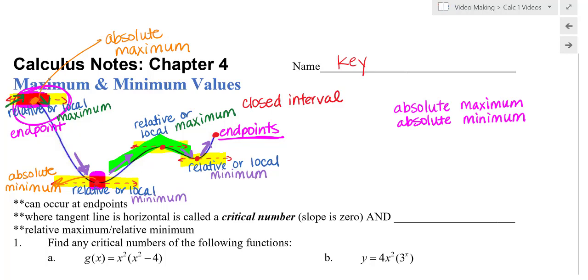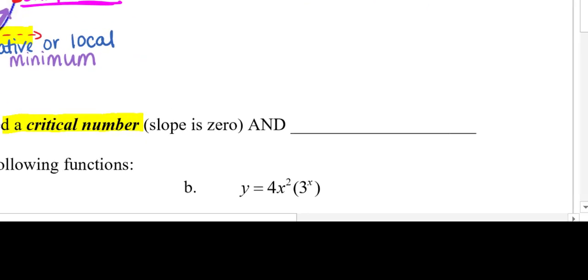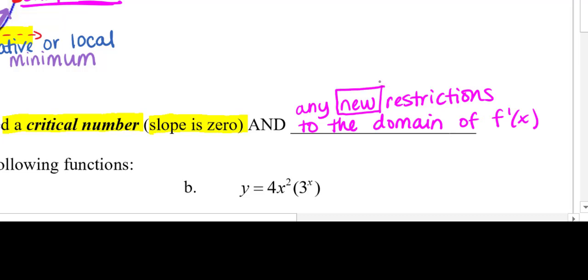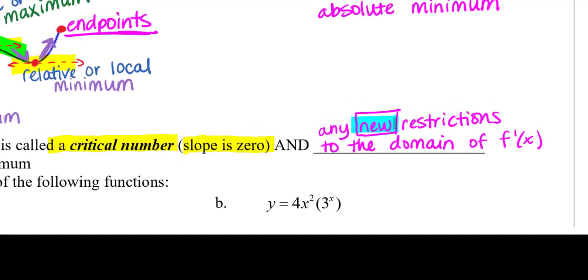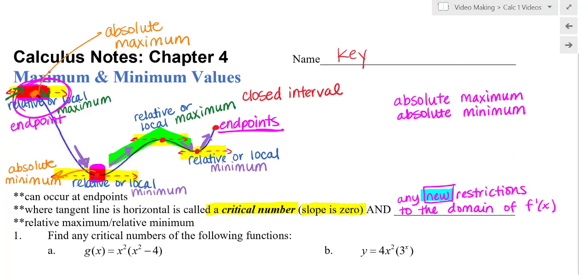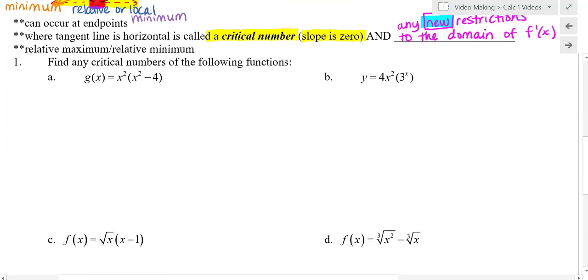So let's talk about how we can find that. Now the definition of a critical number is where your slope is zero and any new restrictions to the domain of f prime. I'm going to box the new restrictions. So what I have to look at is what is the domain of my original function followed by what is the domain of my derivative and compare the two. So let's take a look at a few examples here. Find any critical numbers of the following functions. So we're going to do this a few times here.